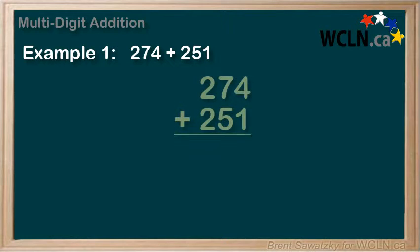First step, let's line them up. We check to ensure that we have everything lined up correctly. Which are the ones in each number? Well in the first number the four is in the one spot and in the second number the one is in the one spot. They are both aligned in the same column.